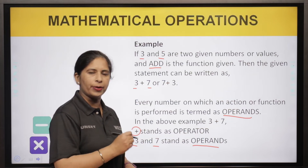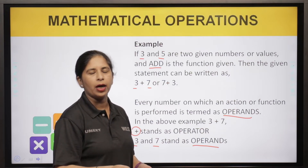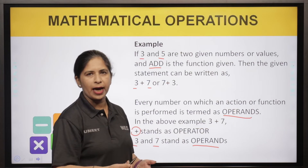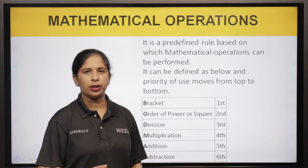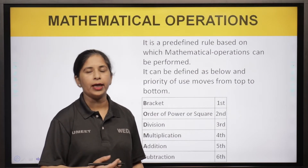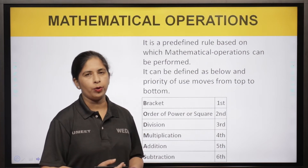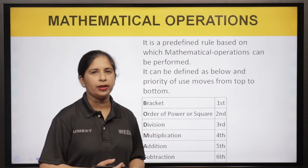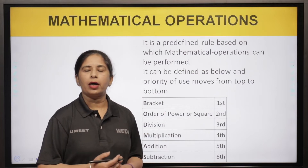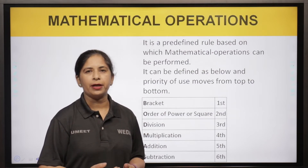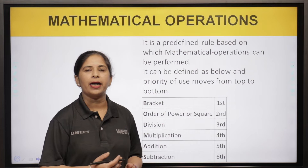Do cheezein hoti hain: operator and operand. Joh aap action kar rahe ho — jaise plus ka action — that is your operator. Aur jinn numbers pe woh action ho raha hai, un numbers ko — jaise three and five — un ko hum bolte hain operands. Any mathematical expression mein hume operands as well as an operator ki zaroorat hoti hai. Agar operator hai aur operands nahi hain, ya operands hain aur operator nahi hai, tabhi bhi action perform nahi hoga. So when solving questions, hume priority rule dhyan mein rakhna hai, kyunki ek simple question nahi milega — multiple operations ho sakte hain, add bhi karna hai, multiply bhi karna hai, divide bhi karna hai, brackets bhi diye rakhe hain.